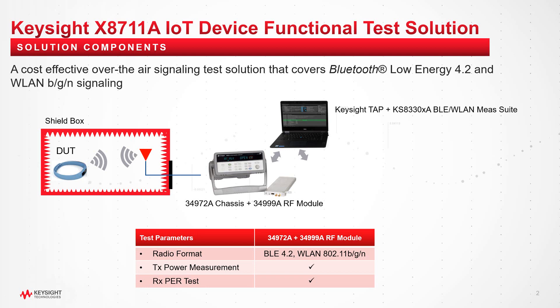This would reduce the development and production test time tremendously and accelerate the product's time to market. The X8711A is built on the Keysight 34972A, which is a popular small footprint 3-slot mainframe. The Keysight 34999ARF module is slotted into the mainframe. It supports Bluetooth Low Energy 4.2 and Wireless LAN 2.4GHz signaling tests, and could be scaled up to include other IoT wireless technologies in the future.